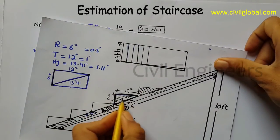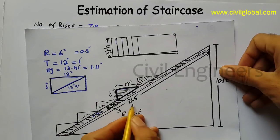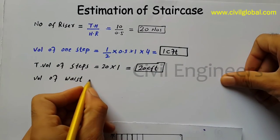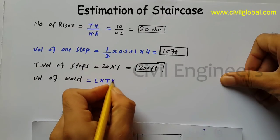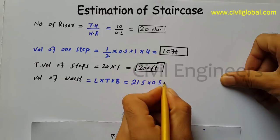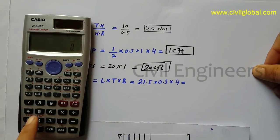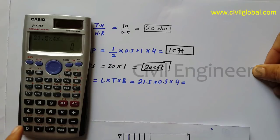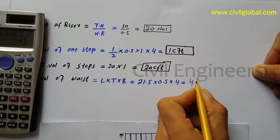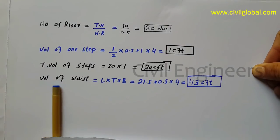Now I have to find out the volume of the waist. The waist length from top to bottom is 21.5 feet, thickness is 0.5 feet, and breadth of the staircase is 4 feet. Volume of waist equals length × thickness × breadth = 21.5 × 0.5 × 4 = 43 cft. So 43 cft is the volume of the waist.